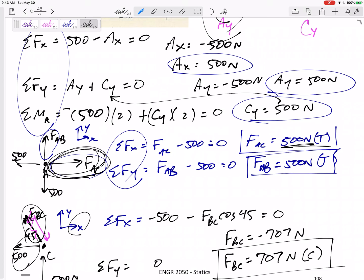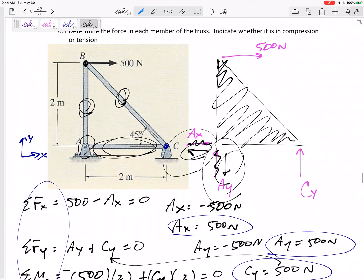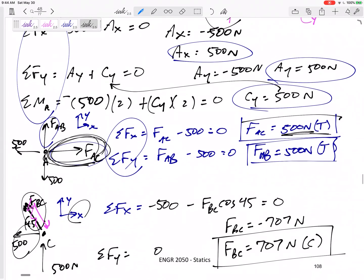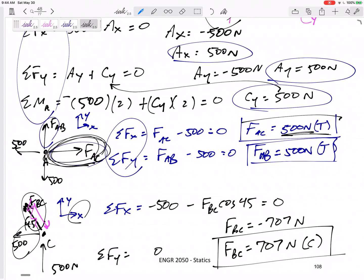All right, but there we go, that's it. I boxed in these three things: force in AC is 500 tension, force in AB is 500 tension, force in BC 707 compression. All right, okay, but that was a real small simple truss there. Let's look at some more complicated ones.